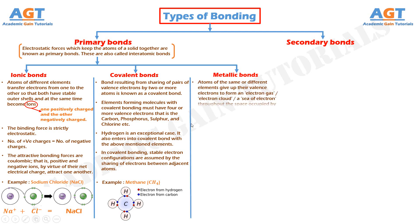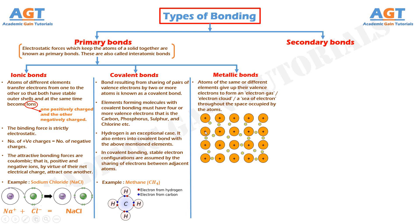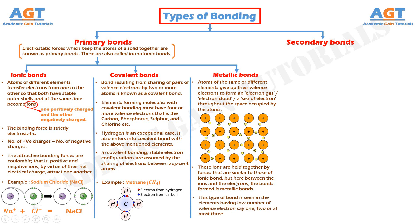Metallic bond. In this type of bond, atoms of the same or different elements give up their valence electrons to form an electron gas, or electron cloud — a sea of electrons throughout the space occupied by the atoms. Having given up the valence electrons, the atoms are, in reality, positive ions. This figure illustrates metallic bonding. These ions are held together by forces that are similar to those of ionic bonds in that they are primarily electrostatic, but here between the ions and the electrons. This type of bond is characteristic of elements having a low number of valence electrons — say one, two, or at most three. These electrons are loosely held by their atoms and therefore can be easily released to the common pool to form a sea of electrons.